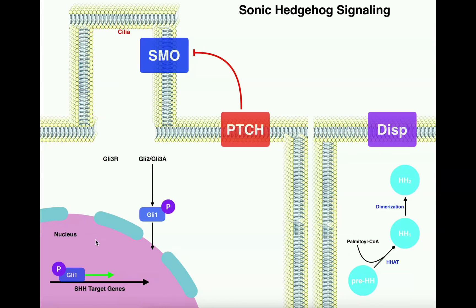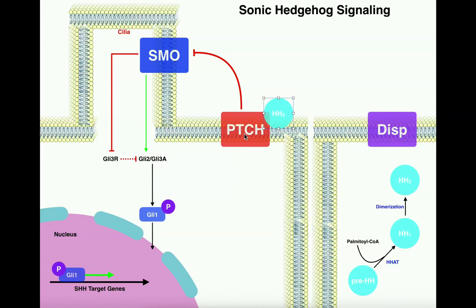So if I want to activate sonic hedgehog target genes, I need to reverse the situation. I need to have activation of smoothened and inhibition of patched. And so now we're going to talk about what happens to do that.